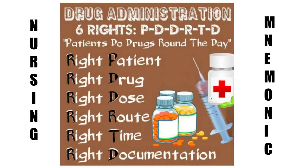Here's a quick nursing mnemonic. We use mnemonics in nursing to help us remember information more easily. This one is specifically for the six rights of medication administration — excluding right reason and right response. Take the first letter of each right and turn it into a phrase: 'Patients do drugs around the day' — right patient, right dose, right drug, right route, right time, and right documentation.